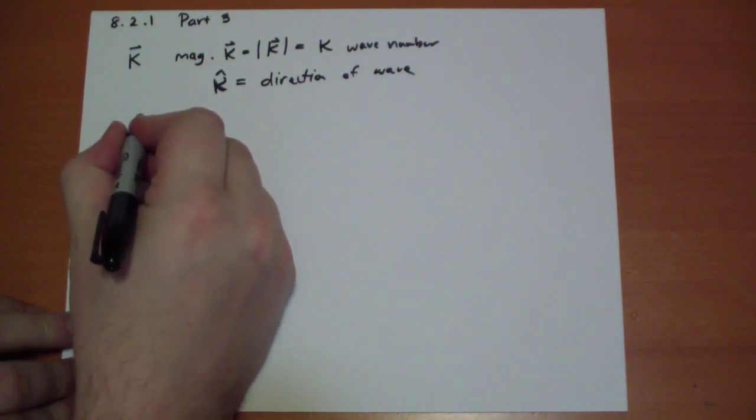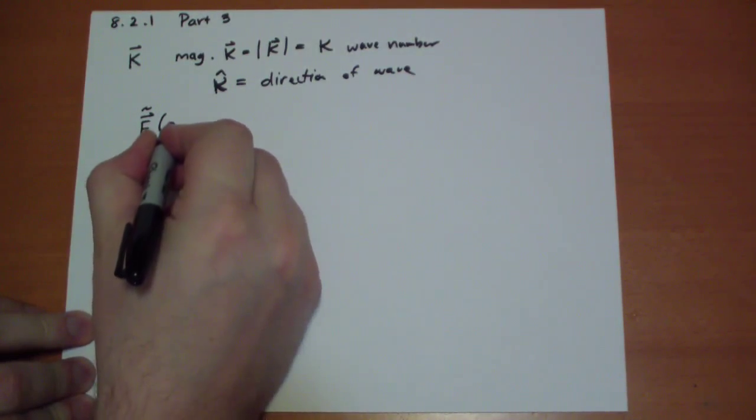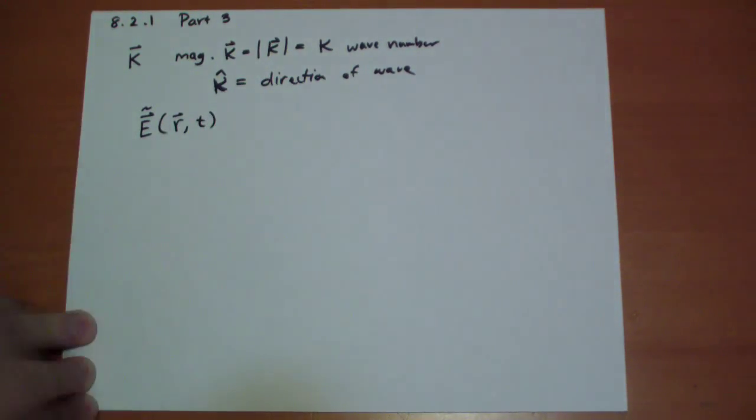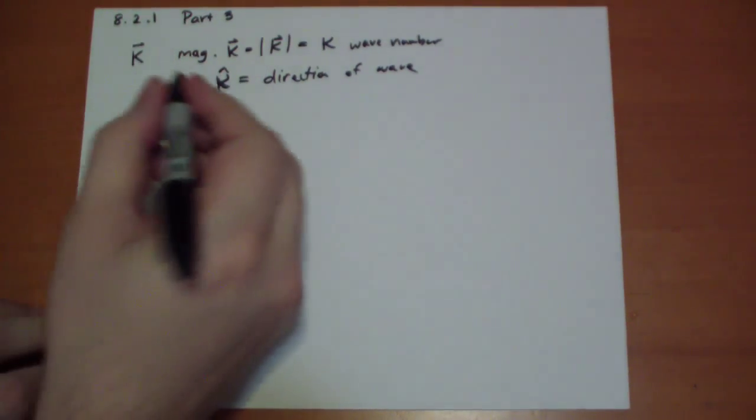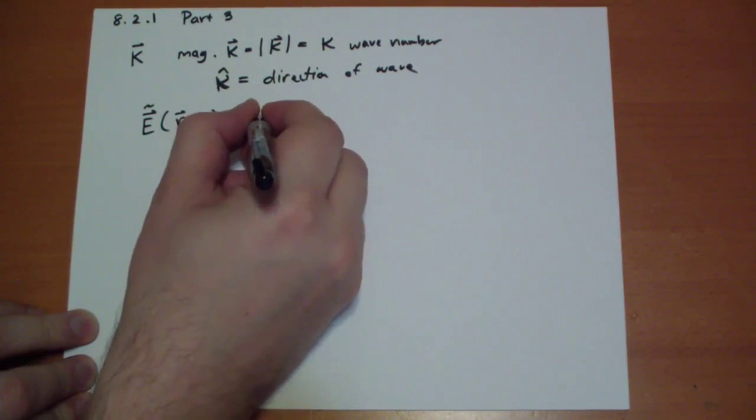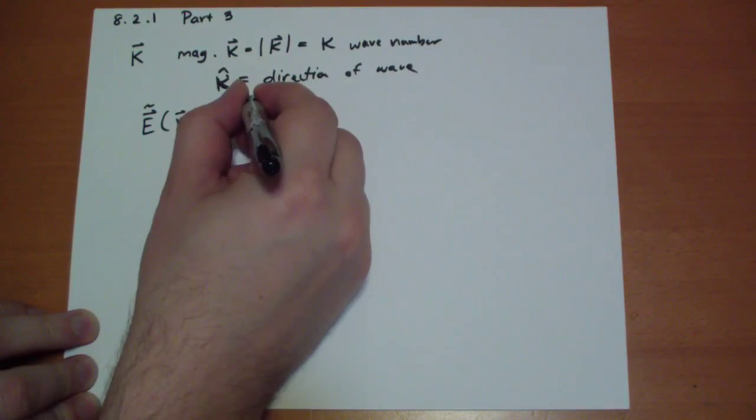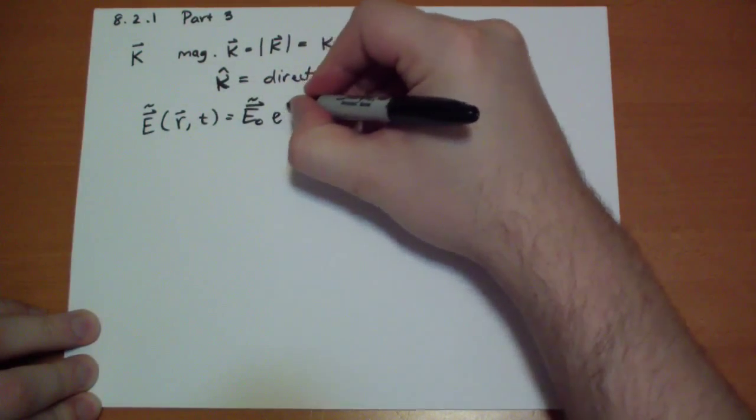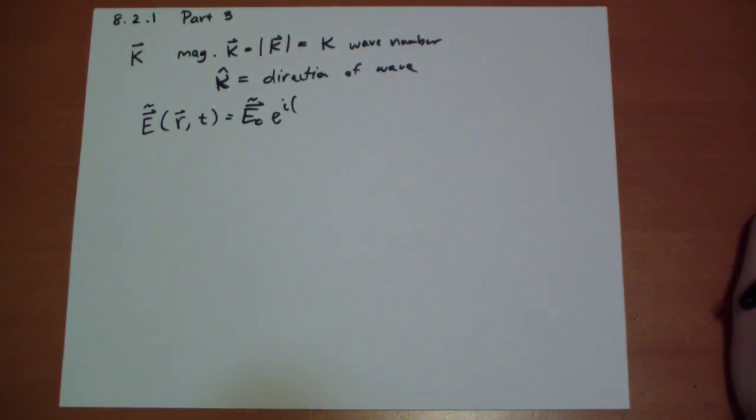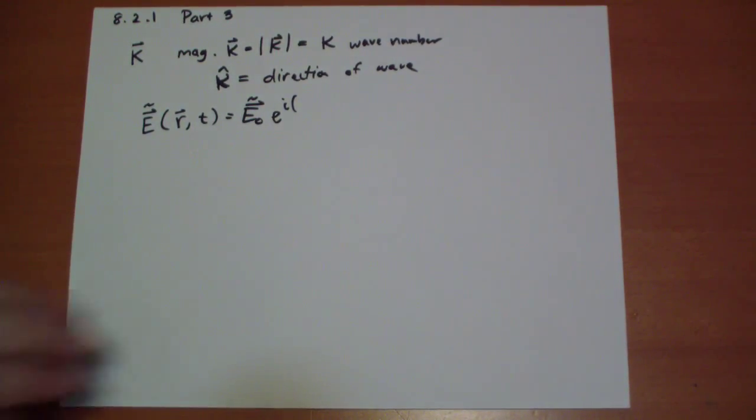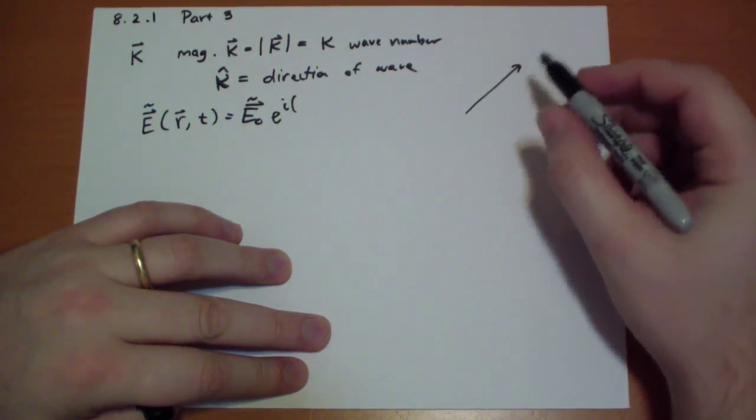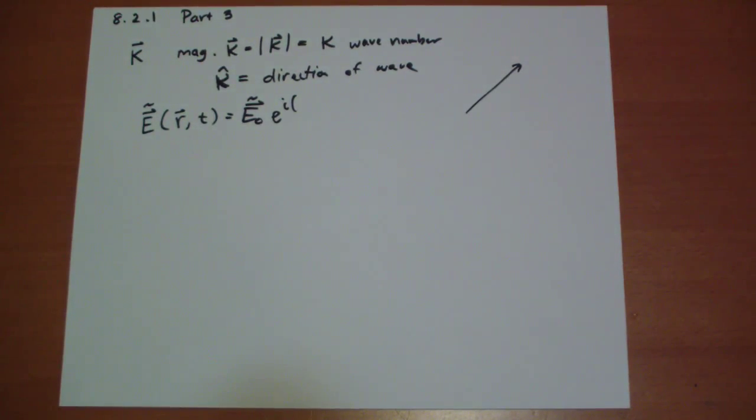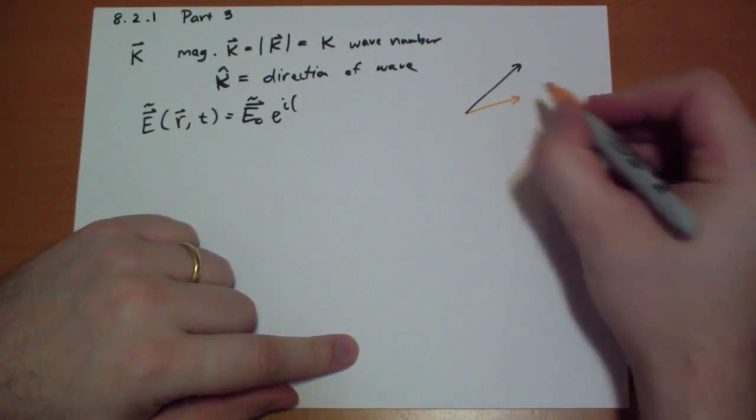So we have our E vector complex at some arbitrary R vector at some time T. It's going to be equal to our E-naught vector, complex, it has a phase constant inside of there, times e to the i. What do we use for kappa x? Depending on the direction that R is facing, let's suppose we have our wave shooting off this direction, and then we have our R pointing over here.